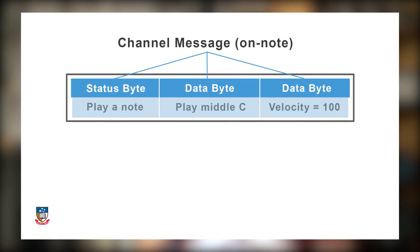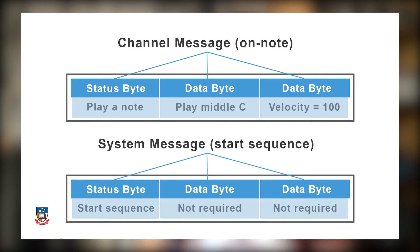There are two overarching types of messages. Channel messages, which deal with playing back musical events and how an electronic sound module should respond to those events, and system messages, which determine how a system will operate in real-time, perform various playback functions, or respond to specific manufacturer commands.